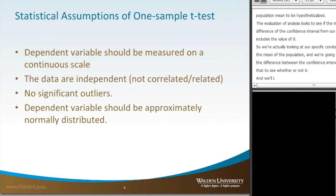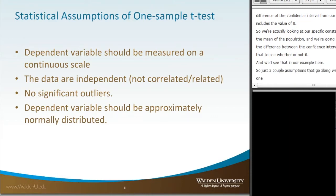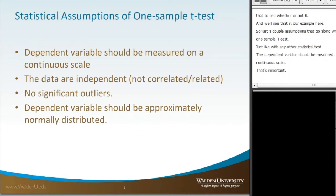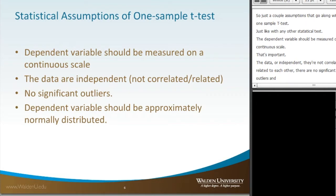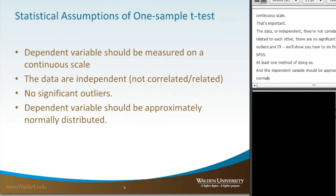There are a couple of assumptions that go along with the one-sample t-test, just like with any other statistical test. The dependent variable should be measured on a continuous scale. The data are independent — not correlated or related to each other. There are no significant outliers, and we'll show you how to check that in SPSS. The dependent variable should also be approximately normally distributed, also referred to as a Gaussian distribution.